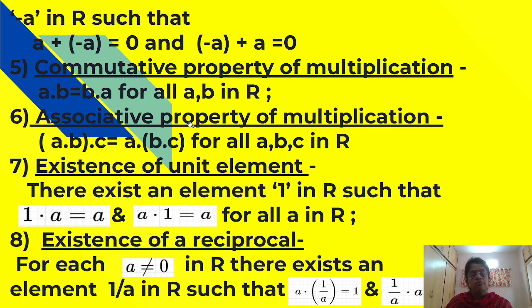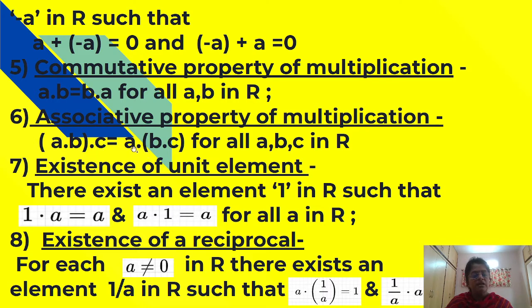Sixth property: associative property of multiplication. It means that (a into b) into c is equal to a into (b into c) for all a, b, c in R. We can consider any three numbers in the set of real numbers. On the LHS, we take the product of a and b first, then multiply by c. On the RHS, we take the product of b and c first, then multiply by a, and LHS equals RHS.